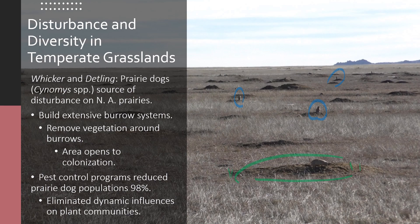Pest control programs reduced prairie dog populations in North America by 98% because their holes were dangerous for cattle. This eliminated the dynamic disturbance of the plant community. Prairie dogs would move their burrow systems to new spots after eating an area bare, and they also interacted with bison that rolled in those areas. By eliminating this one disturbing species, diversity in temperate grasslands was reduced.